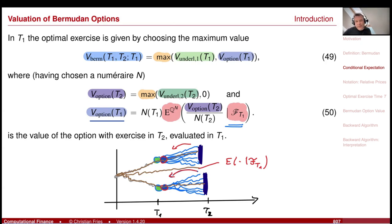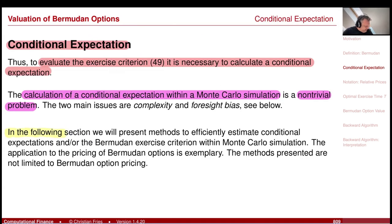Let's continue assuming we can somehow calculate or estimate this conditional expectation and see how we would value the Bermudan option, solving the conditional expectation problem later. For example, maybe there's an analytic formula — the Black-Scholes formula — that allows calculating this conditional expectation. For this two-exercise-state example, the last one is just a European option, and in a Black-Scholes model we have an analytic formula for it.